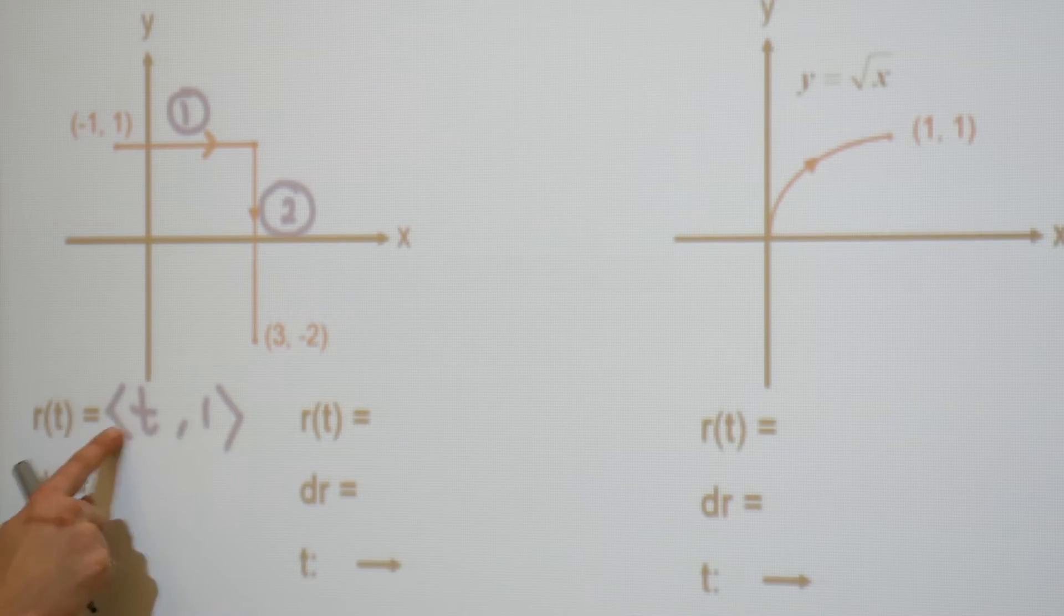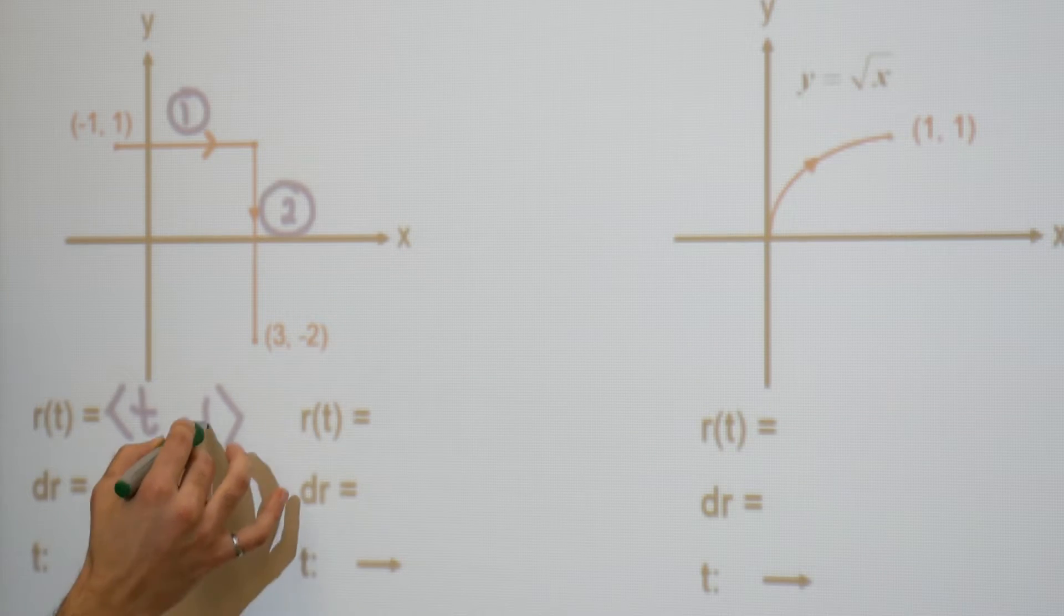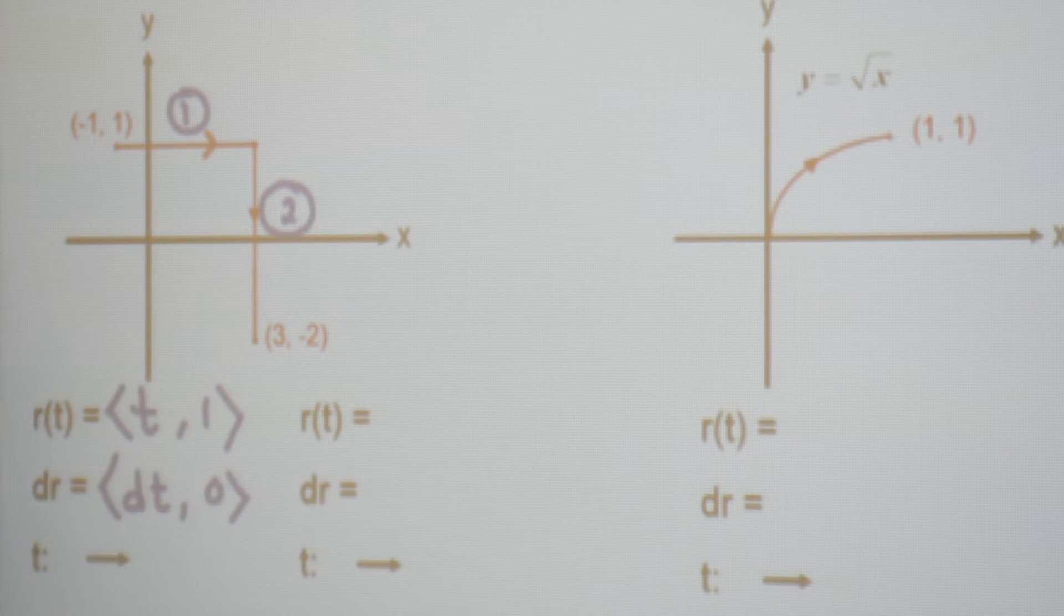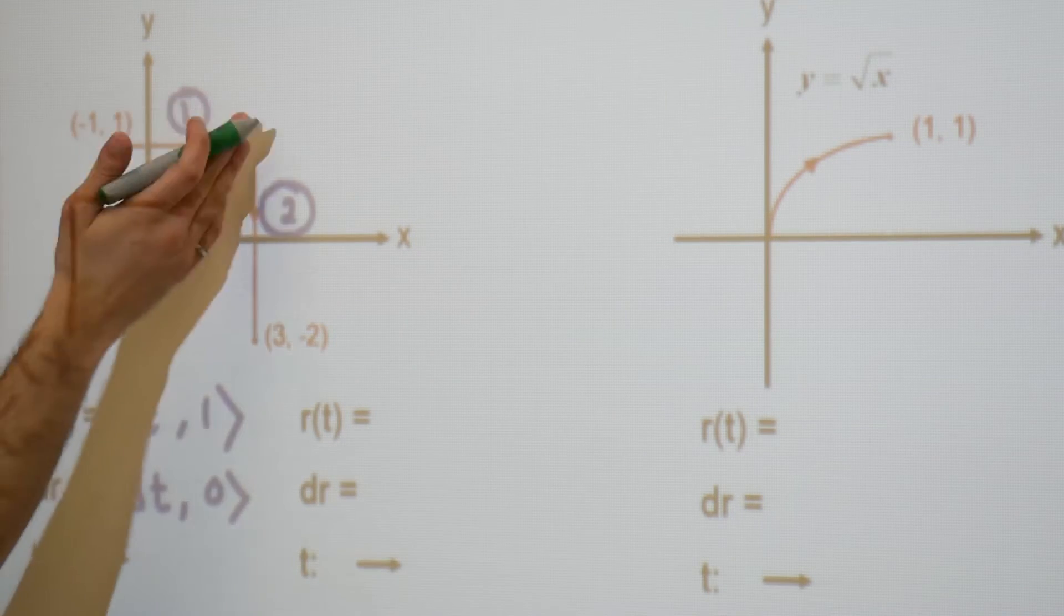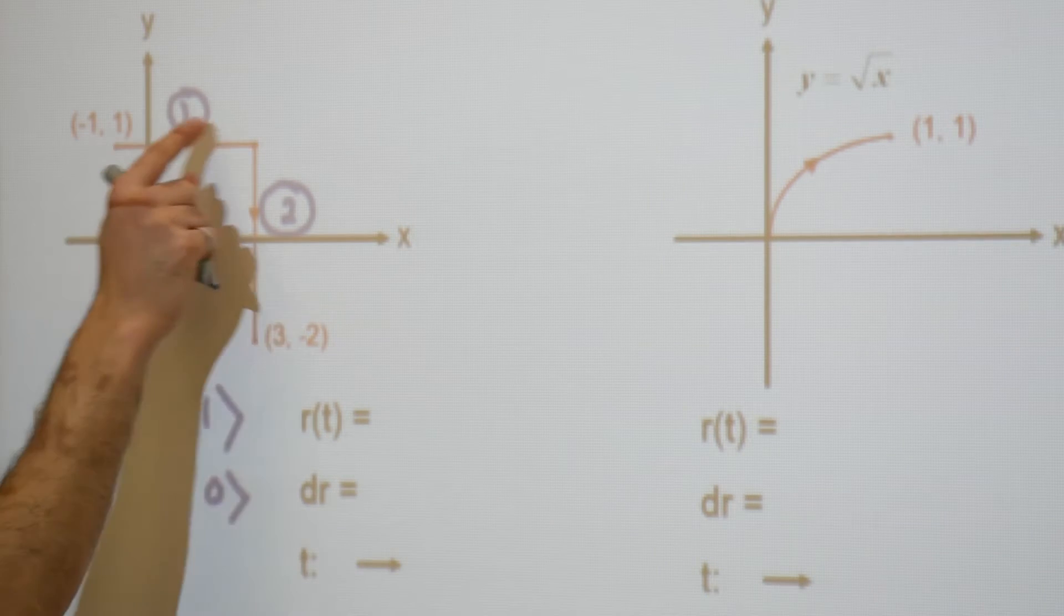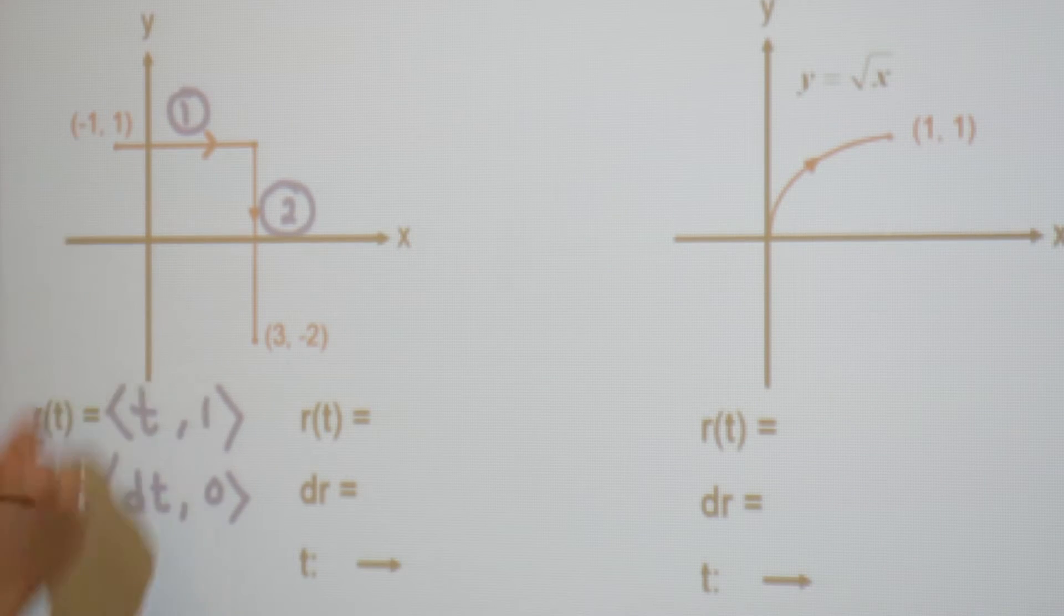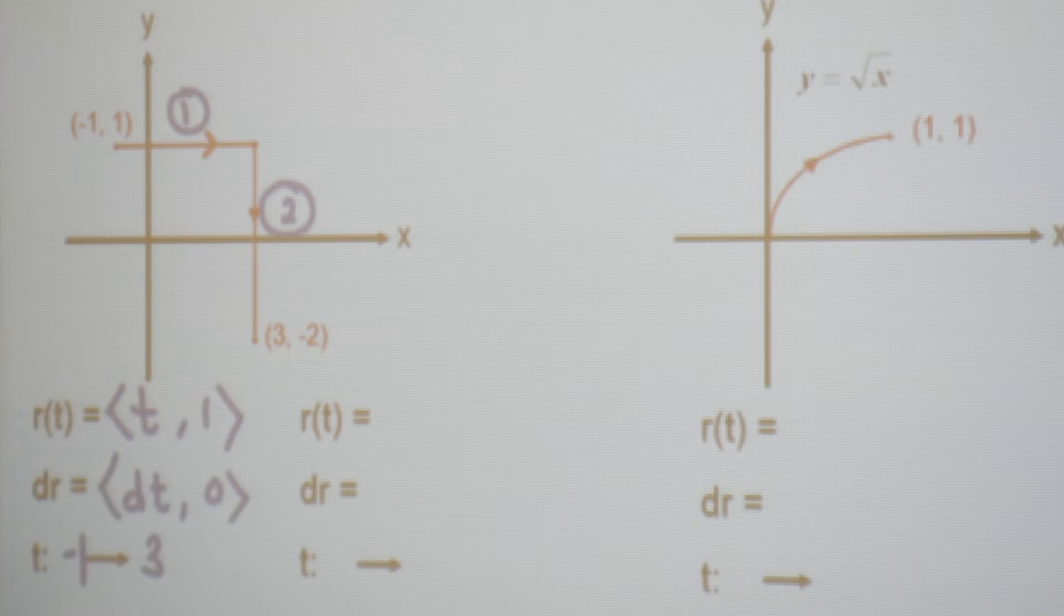To find dr, you're simply going to take the derivative of this. So the derivative of t is just one. So one dt, the derivative of one is zero. Continuing along, we're going to ask ourselves, okay, t starts where and goes where? Well, understanding that t is actually your x value, simply ask yourself, as you move from here to here, what is the smallest and largest x value? Well, x starts at minus one. And where does x end? Well, it ends at a value equal to three. And that is it. This is how you parameterize horizontal lines.